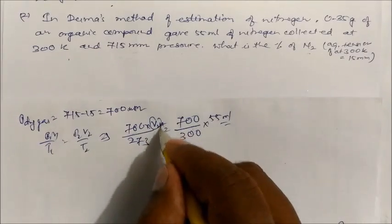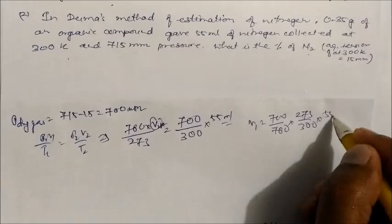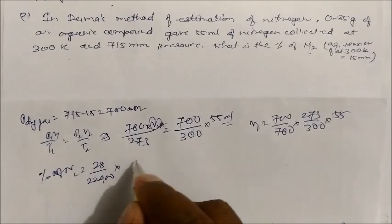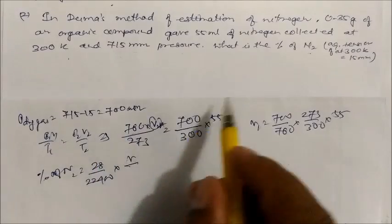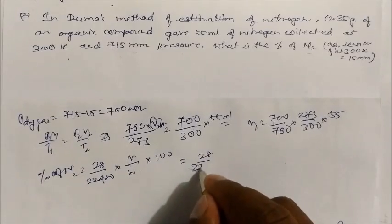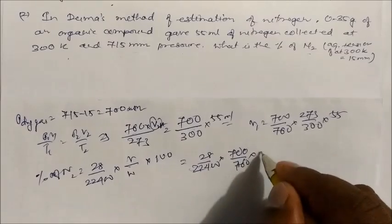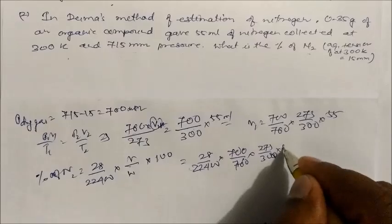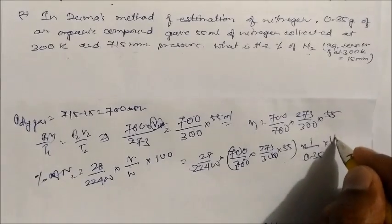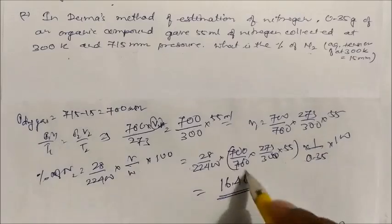V₁ (at STP) = (700/760) × (273/300) × 55. Percentage of nitrogen = (28/22400) × V₁ ÷ weight of compound × 100 = (28/22400) × (700/760) × (273/300) × 55 ÷ 0.35 × 100. On solving, you get 16.46%. This is the percentage of nitrogen in the organic compound found by the Dumas method.